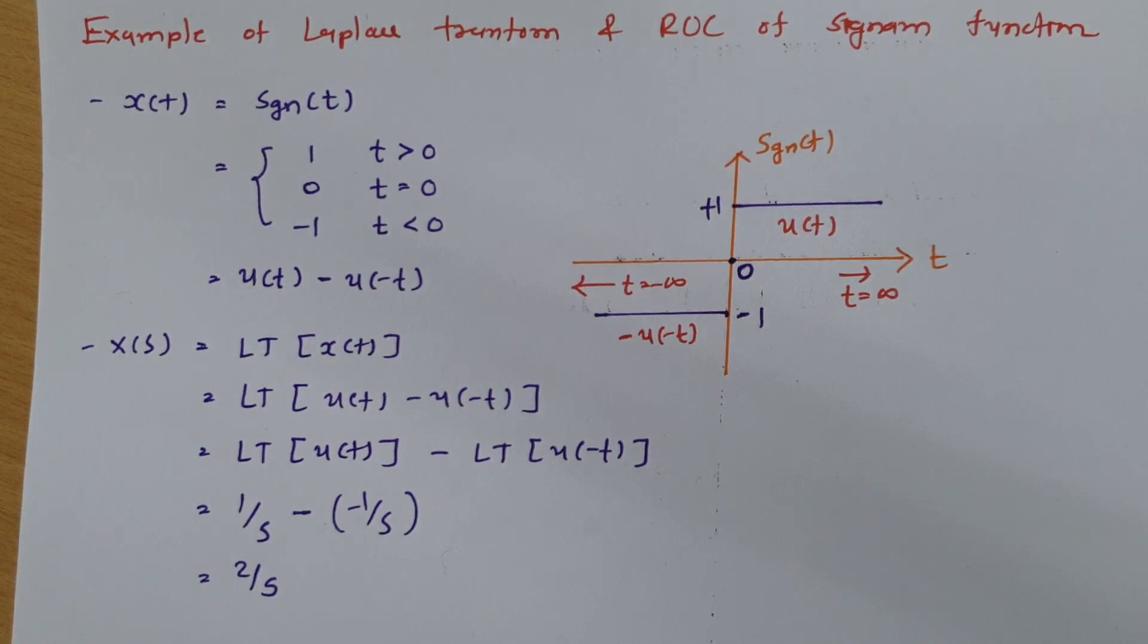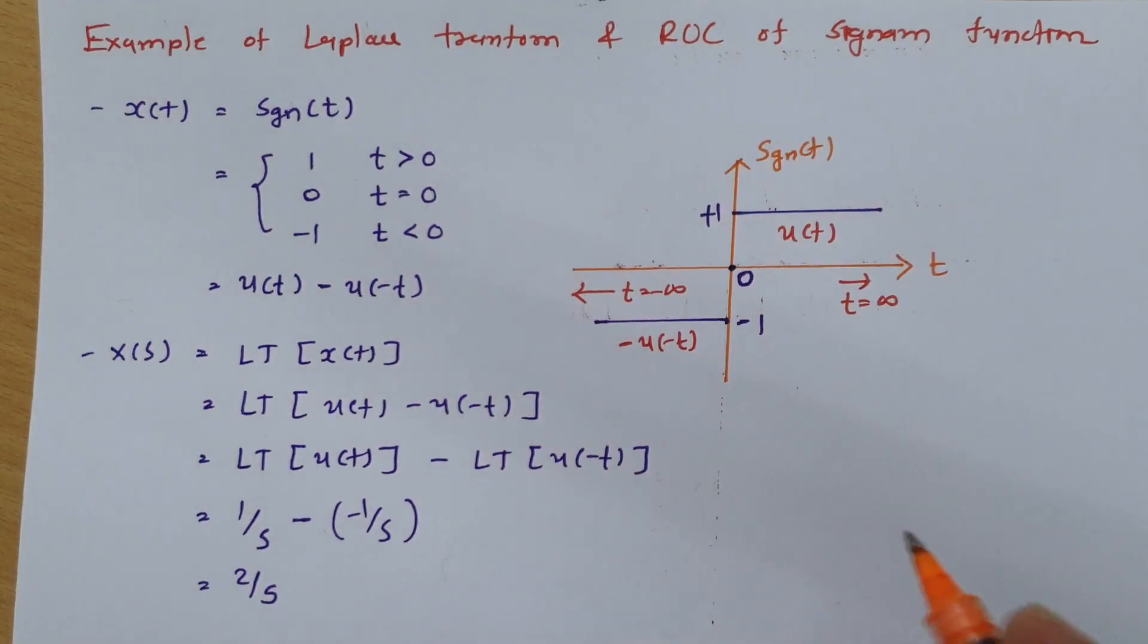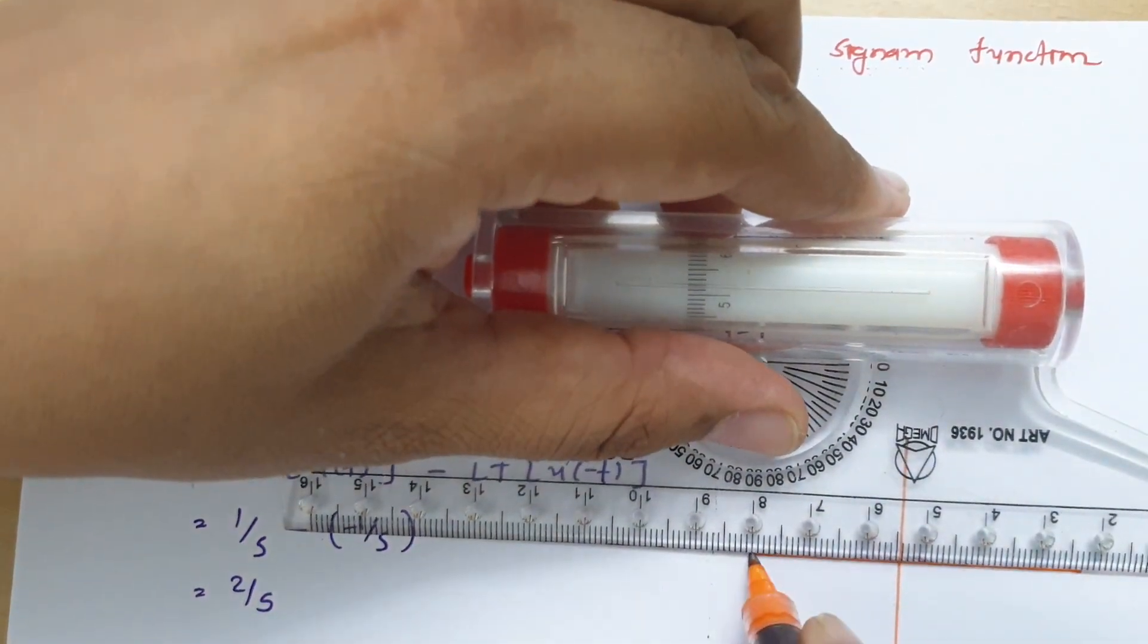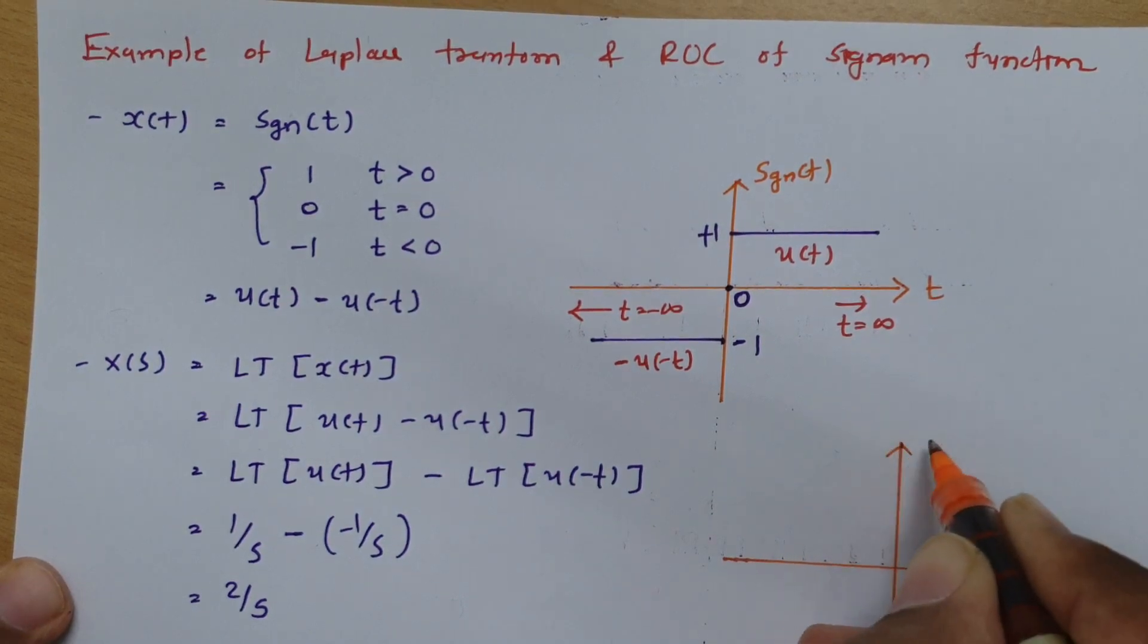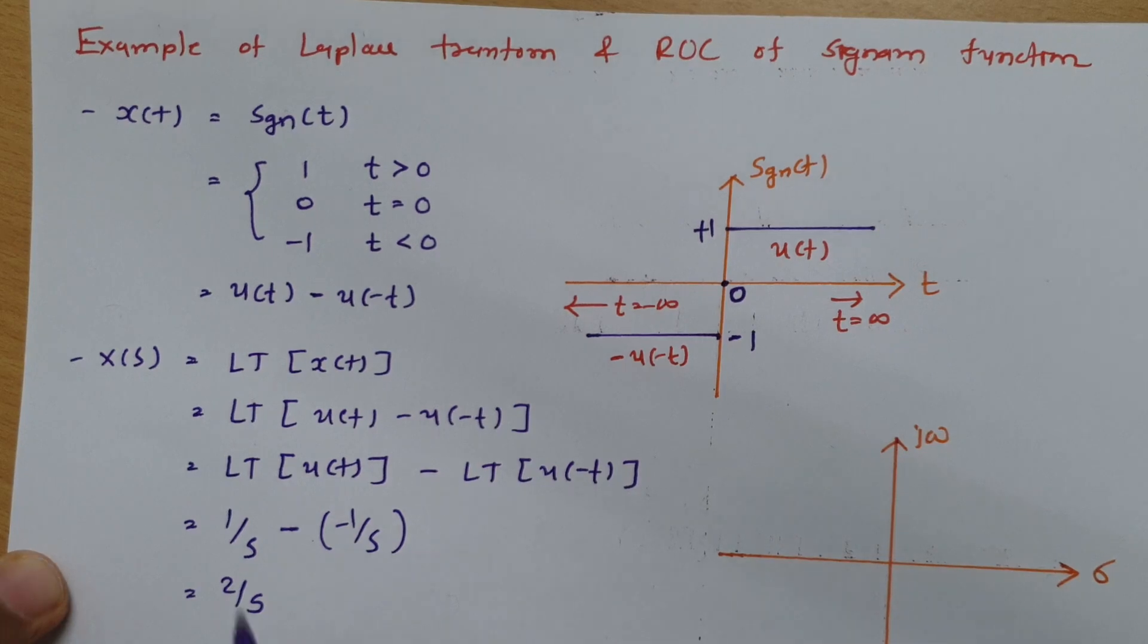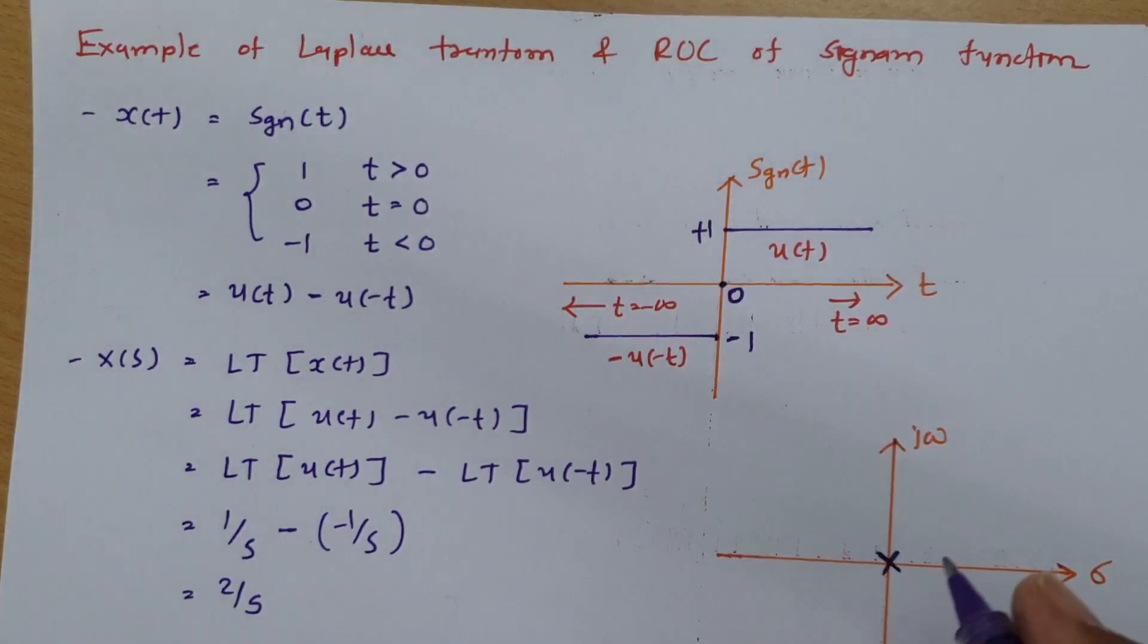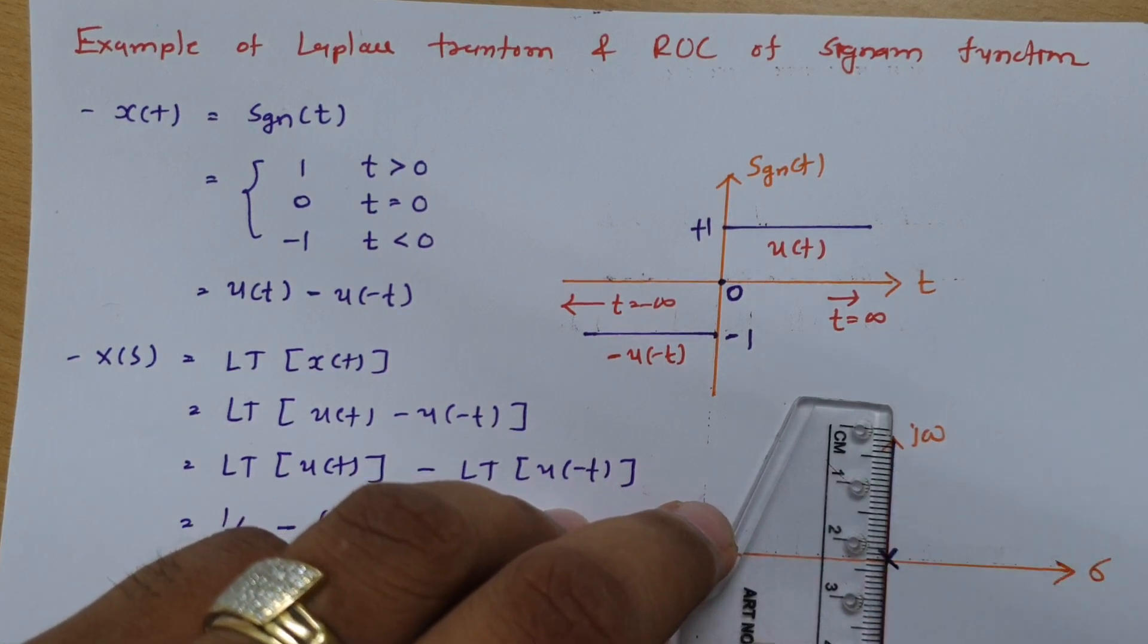Now I will explain how we can have signum function's ROC. So for ROC we need to have s plane. So I am plotting s plane here. Over here there is real part sigma and over here there is imaginary part j omega. Now see both of these signals are having pole at s equals 0. So I am just mentioning it. Pole is at s equals 0 and parallel line to the imaginary axis that is this.